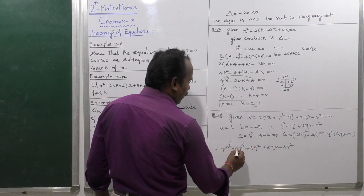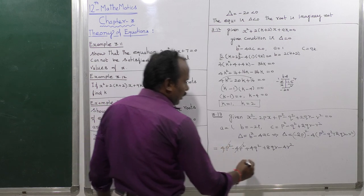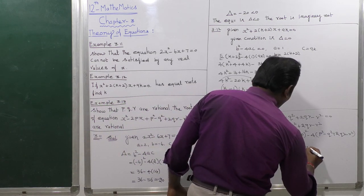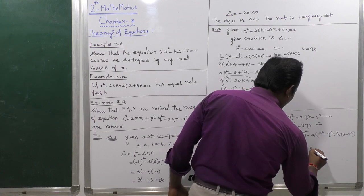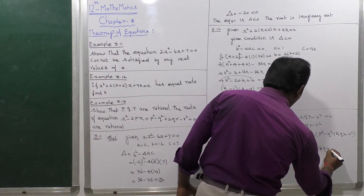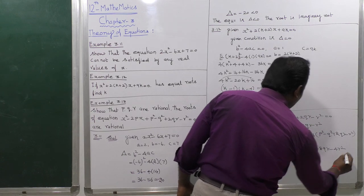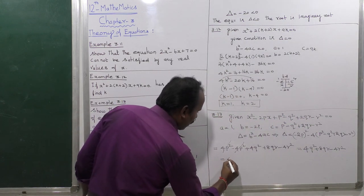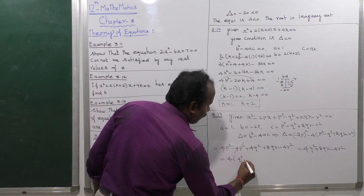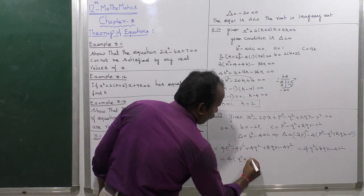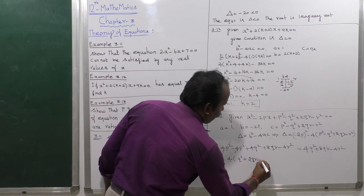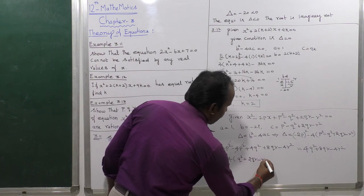The first and second terms cancel. So delta equals 4q squared plus 8qr minus 4r squared. Taking out the common factor of 4, we get delta equals 4 into (q squared plus 2qr minus r squared).